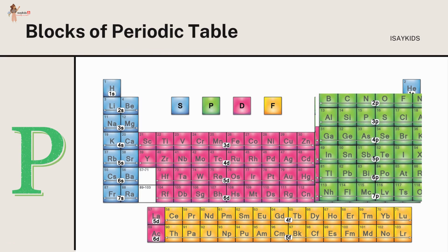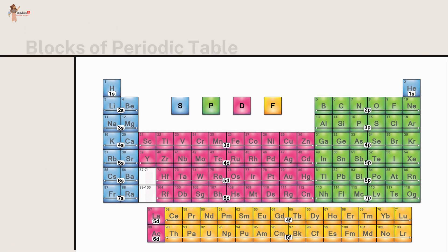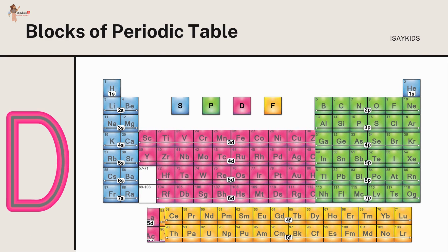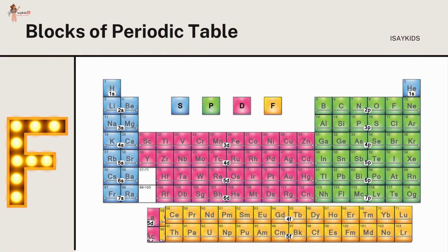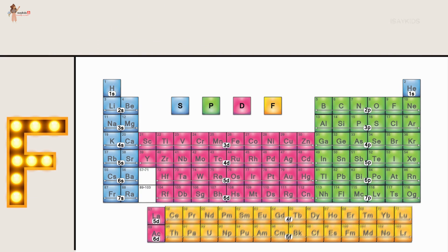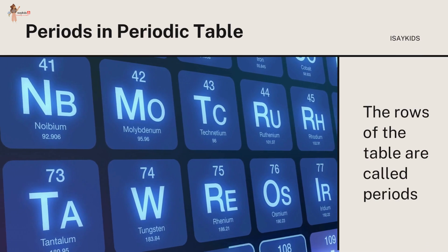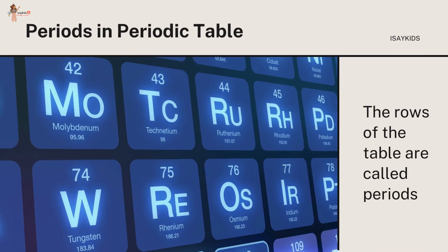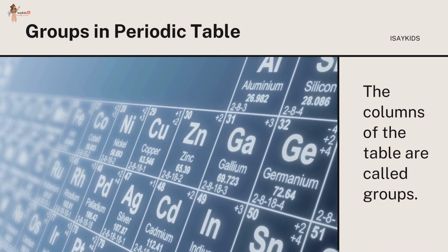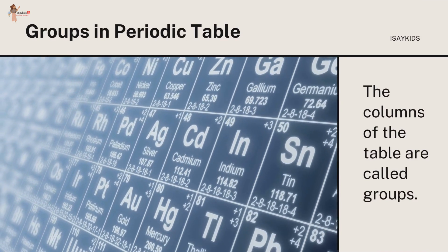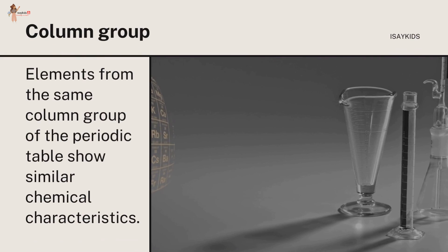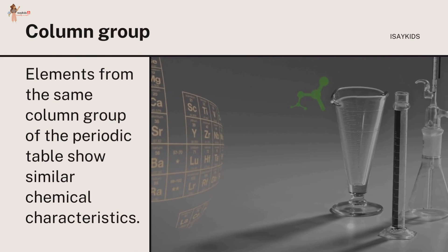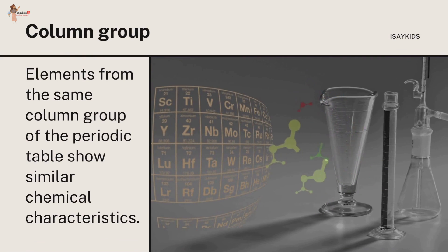The rows of the table are called periods and the columns are called groups. Elements from the same column or group of the periodic table show similar chemical characteristics.